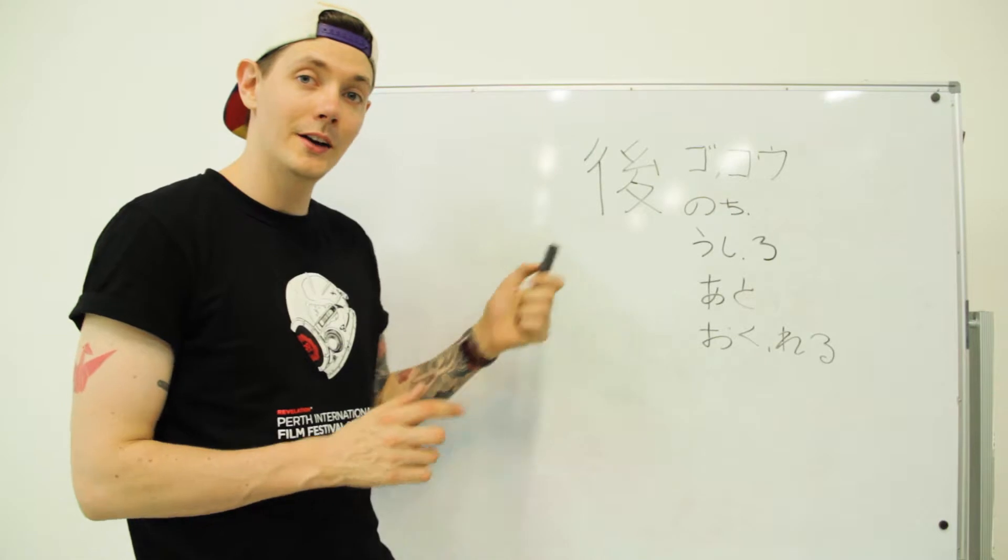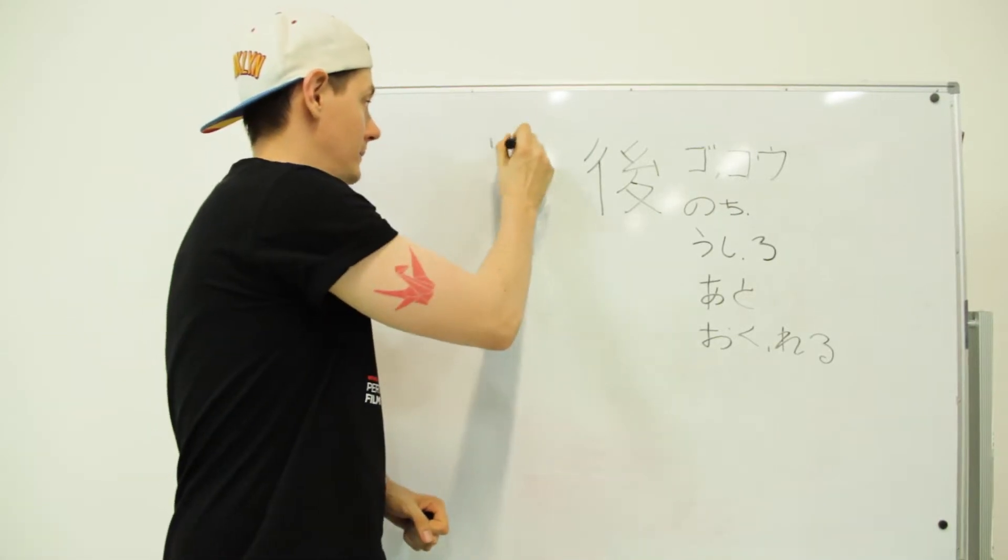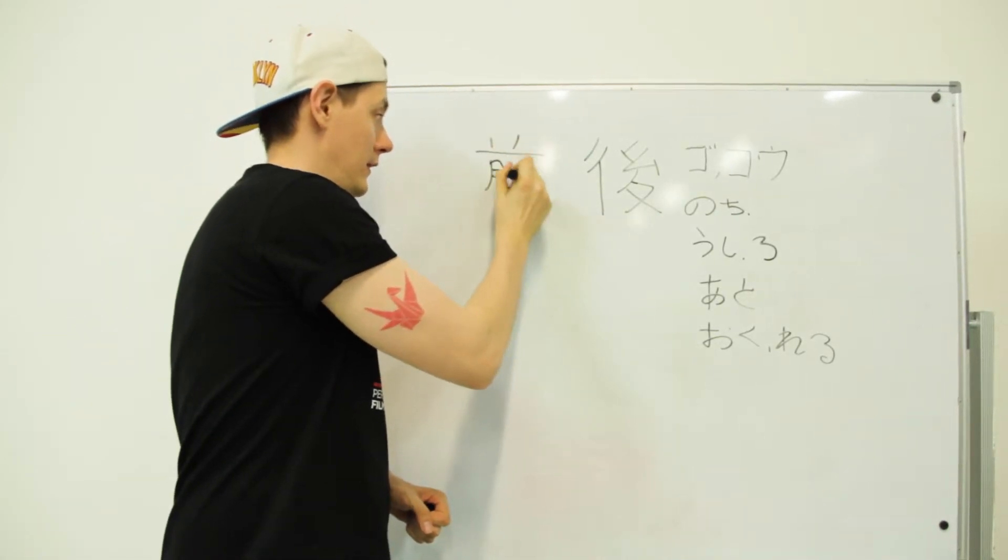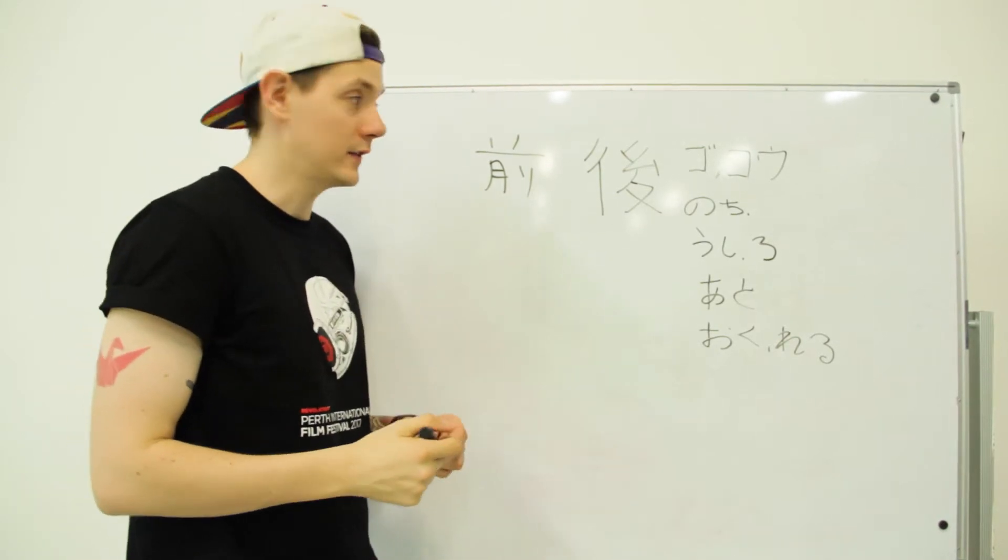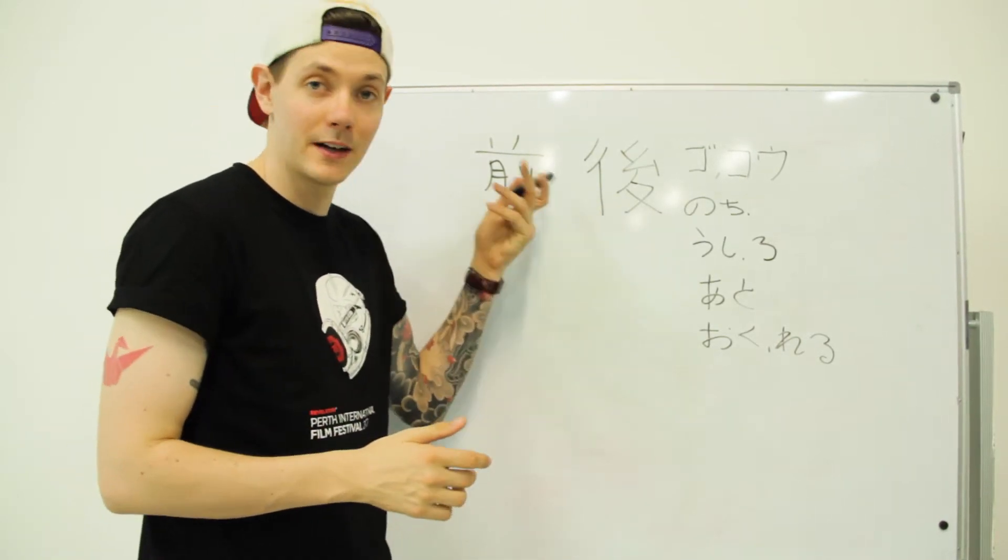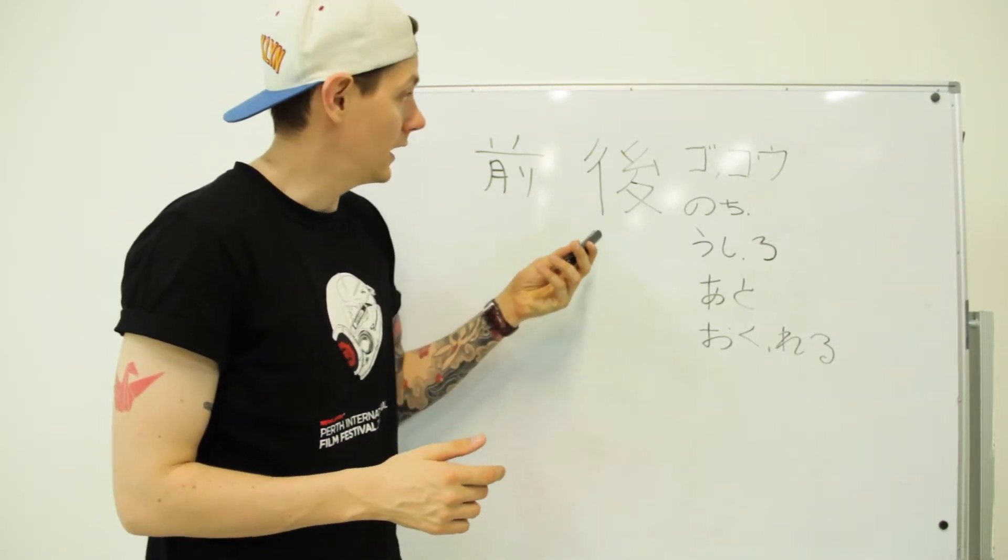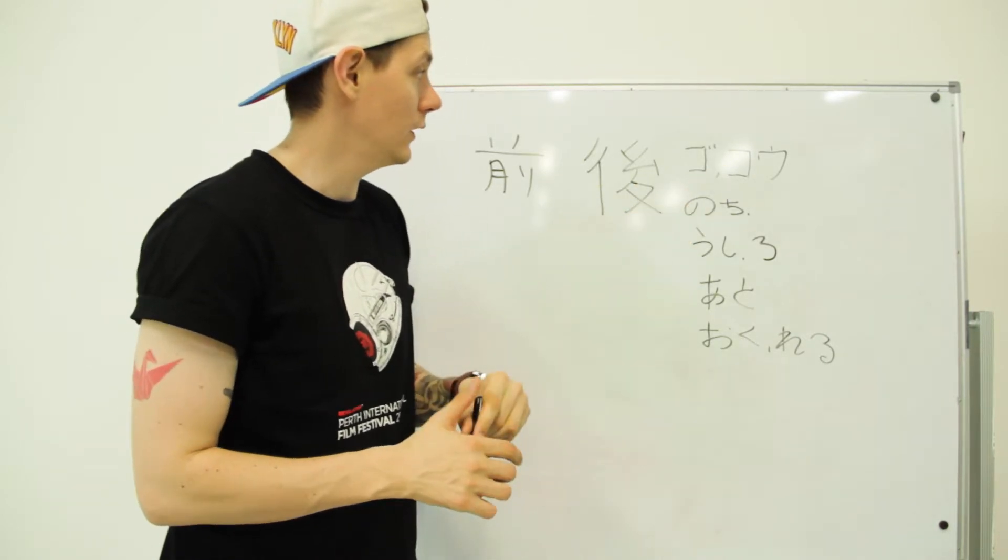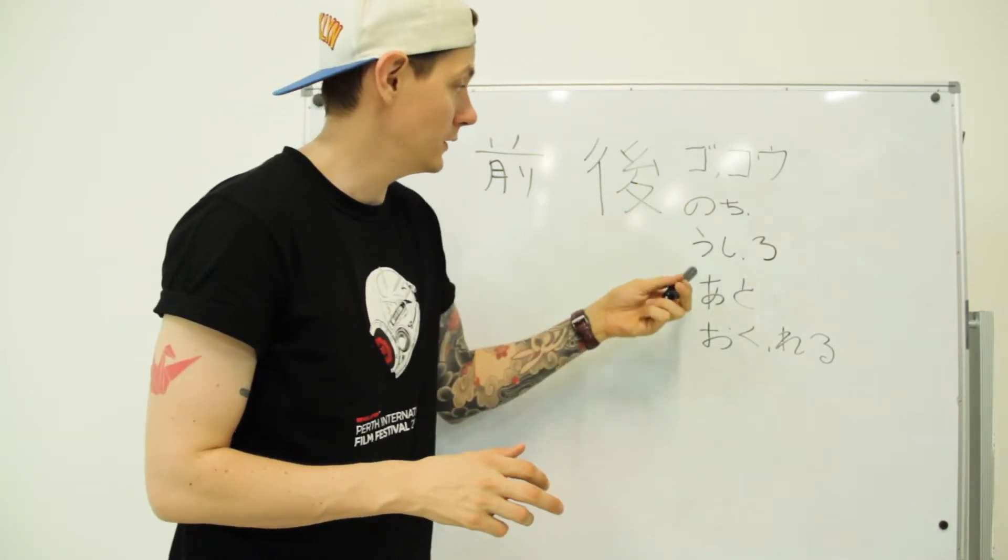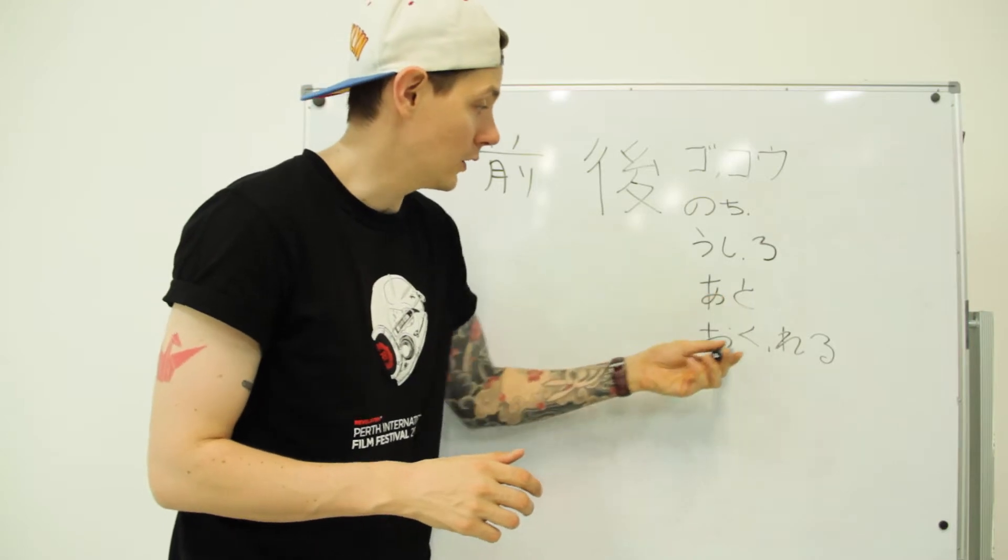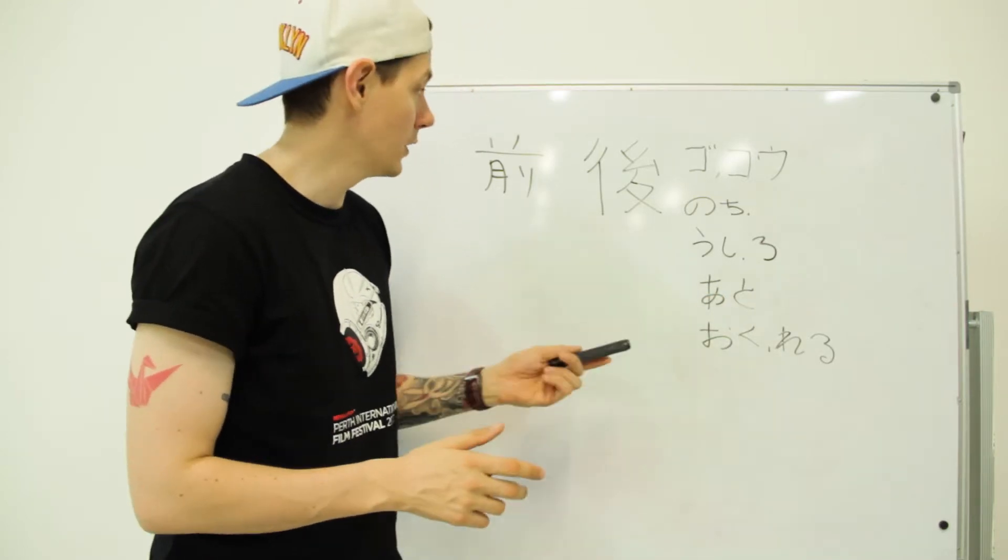Here we have the partner of before. There's Kanji. This is the other half there, this is before, this Kanji means after. Go, ko are the onyomi readings. Nochi, ushi from ushiro, ato, oku from okureru are the kunyomi readings.